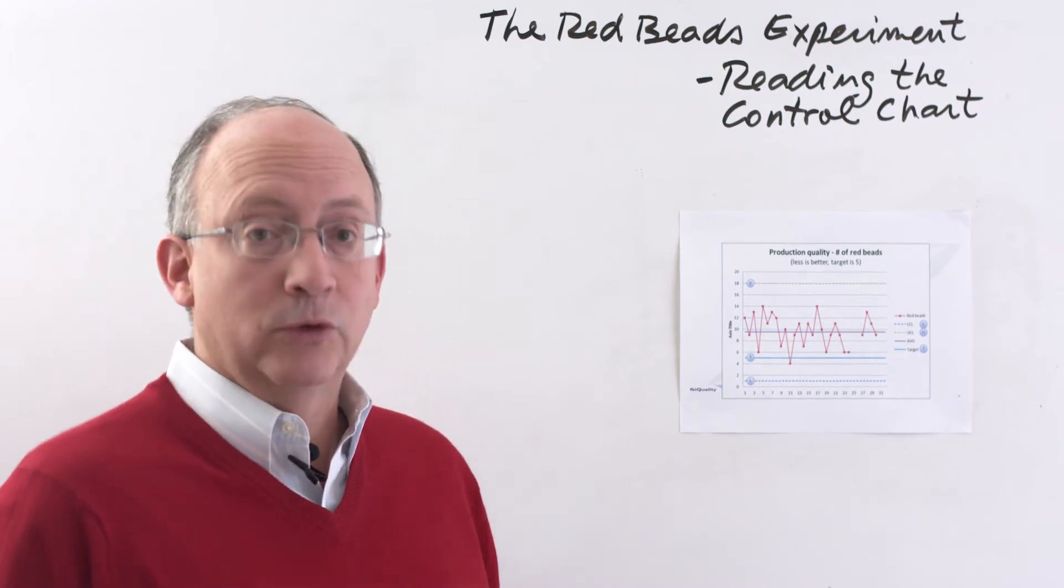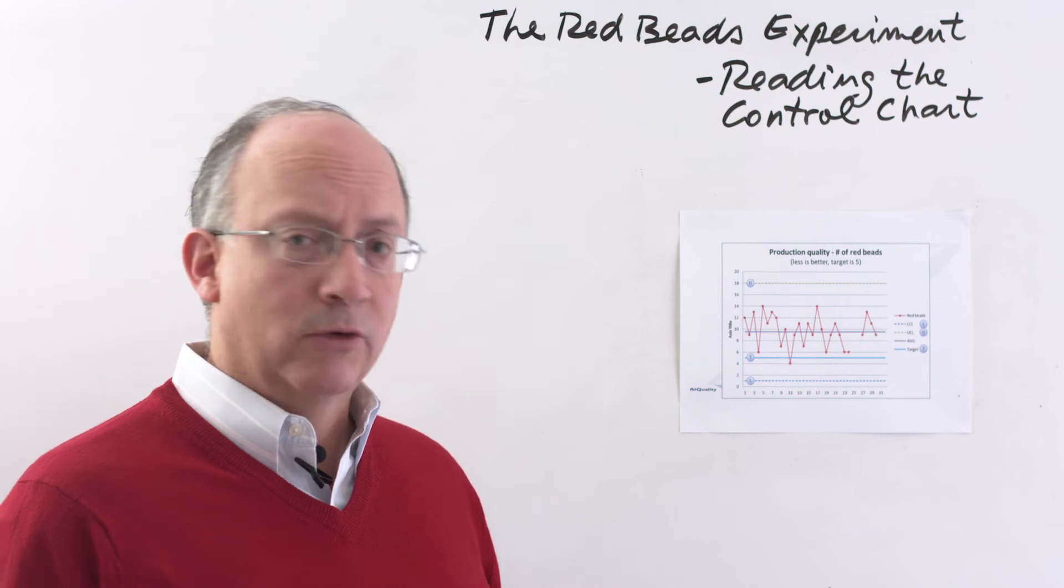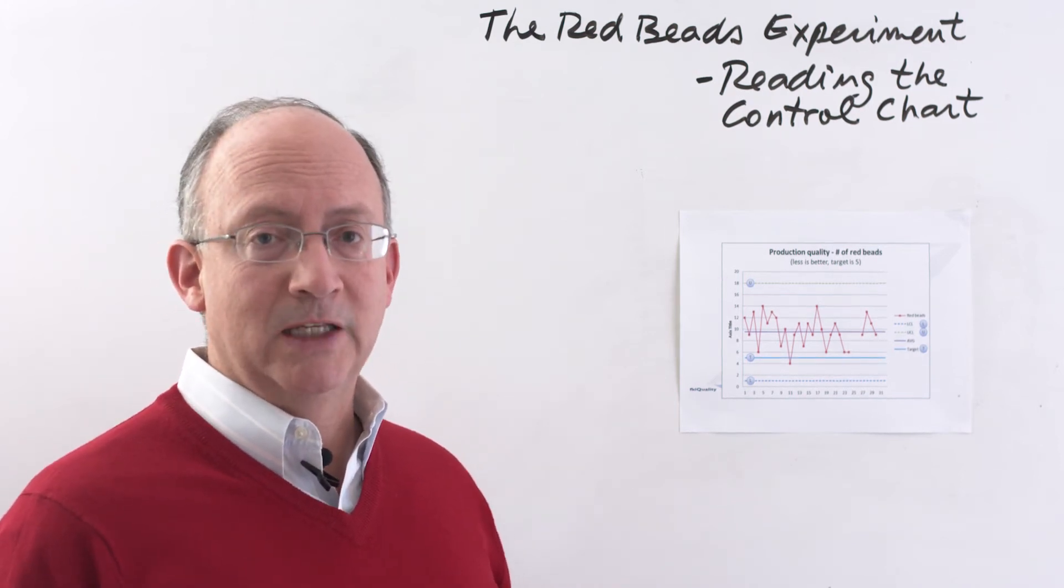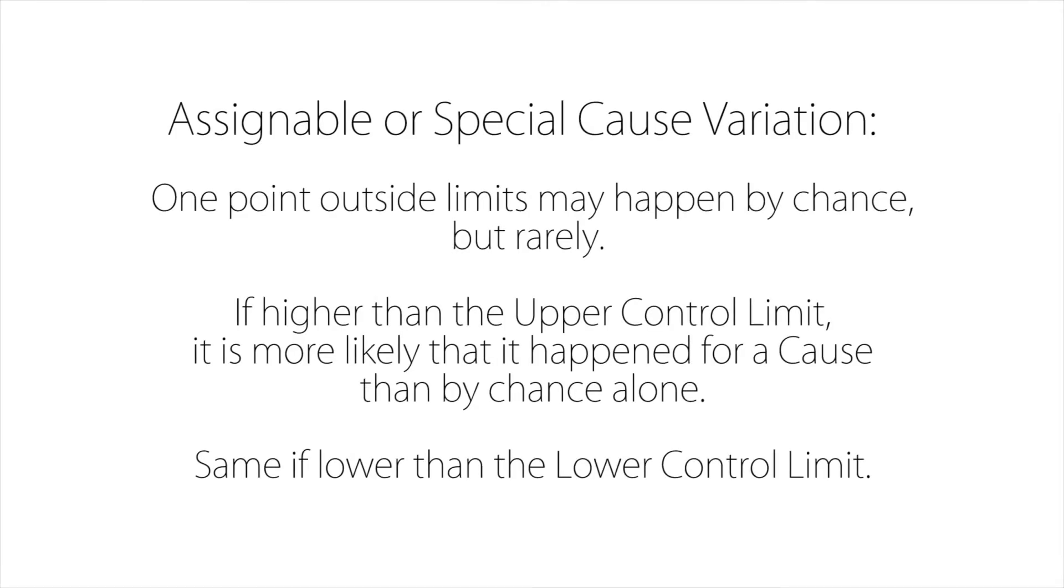Or you speak with people, you talk to people who do the work, and they can explain this to you. In other cases, of course, it's not going to be an easy thing, and some additional research may be needed. But that's an example, a perfect example of an assignable cause. Somebody got nervous, they withdrew the paddle too quickly, a few of the marbles rolled off, and there you go, 20-something beads, which clearly is outside of the limits.